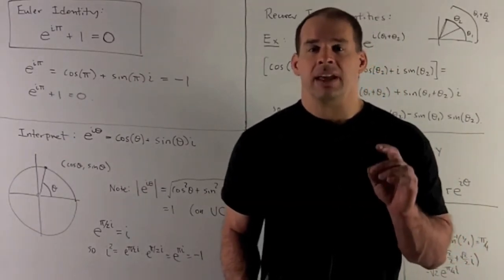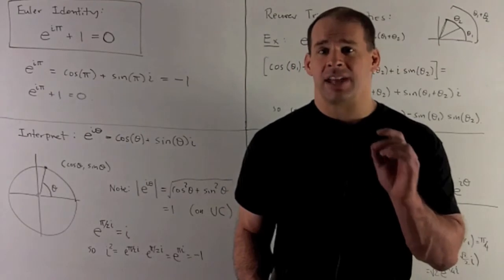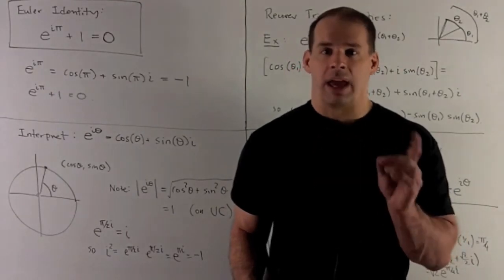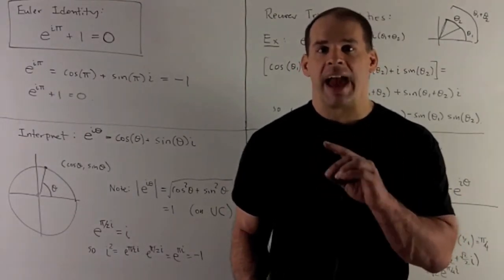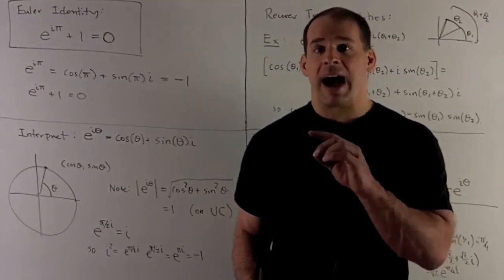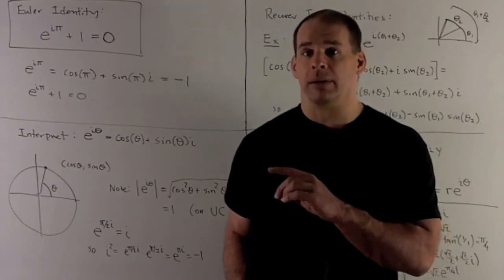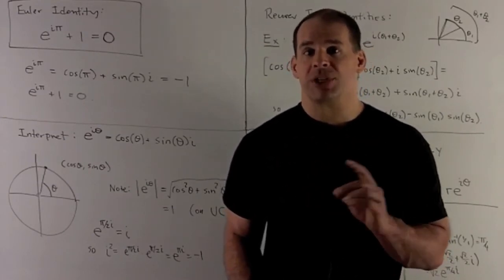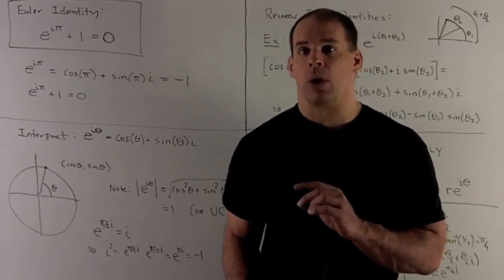Now, if I take E to the pi halves I times E to the pi halves I, well, we have the same base, so we add the angles. That gives me pi I. So I squared is equal to E to the pi I, and we know that's minus 1. So that just reconfirms I squared equals minus 1.